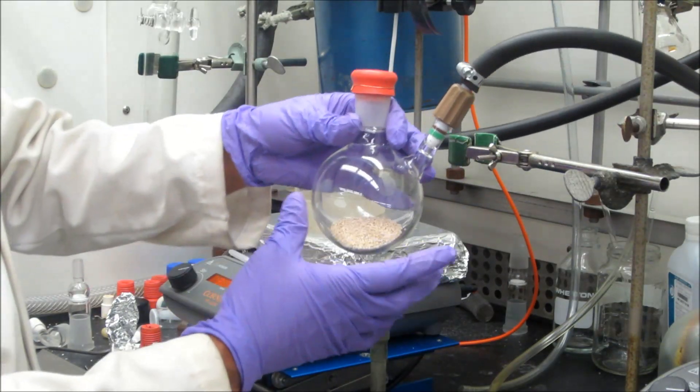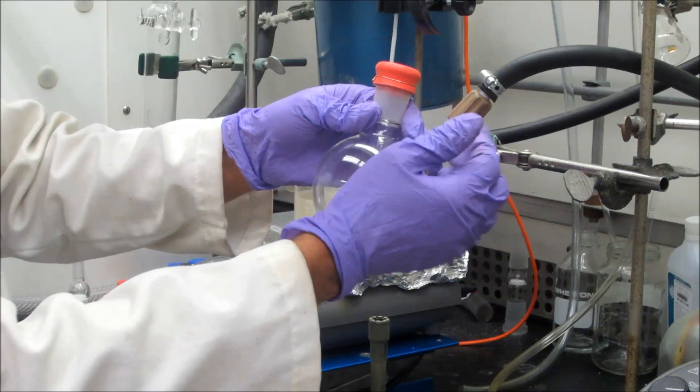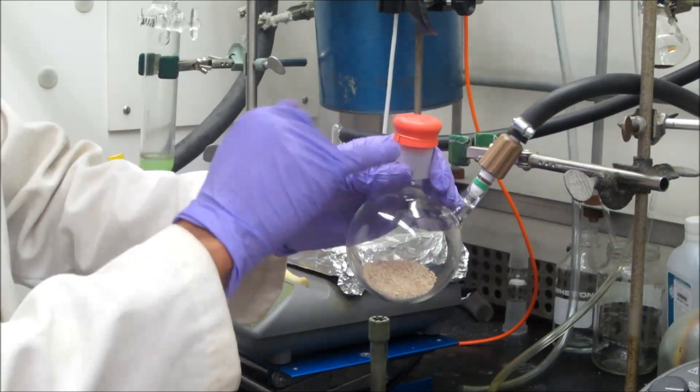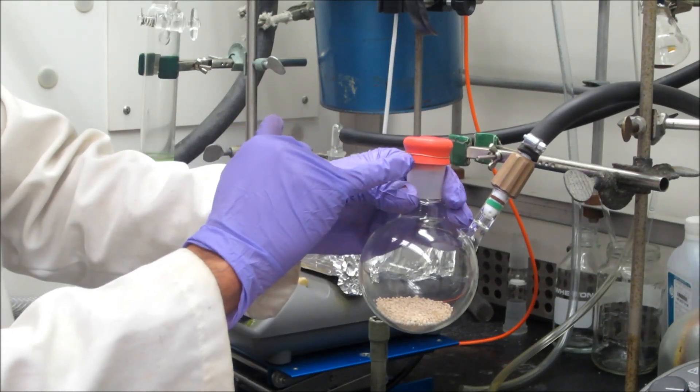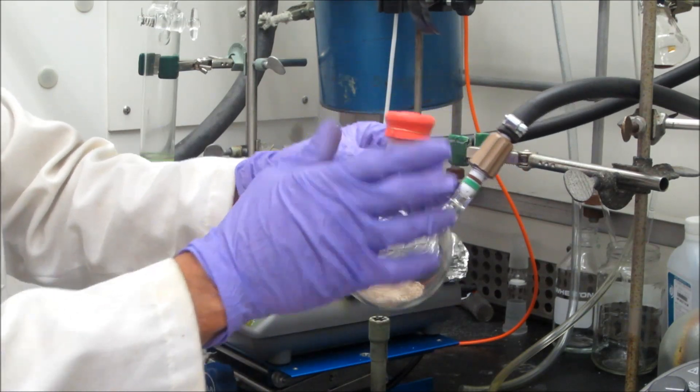And so we've got the schlenk flask with our sieves. We've got this needle valve that will allow us to put this under vacuum, close it off, put it under nitrogen, close it off. And then we've got a septum with some copper wire tied around it rather tightly to ensure that the septum itself is airtight.